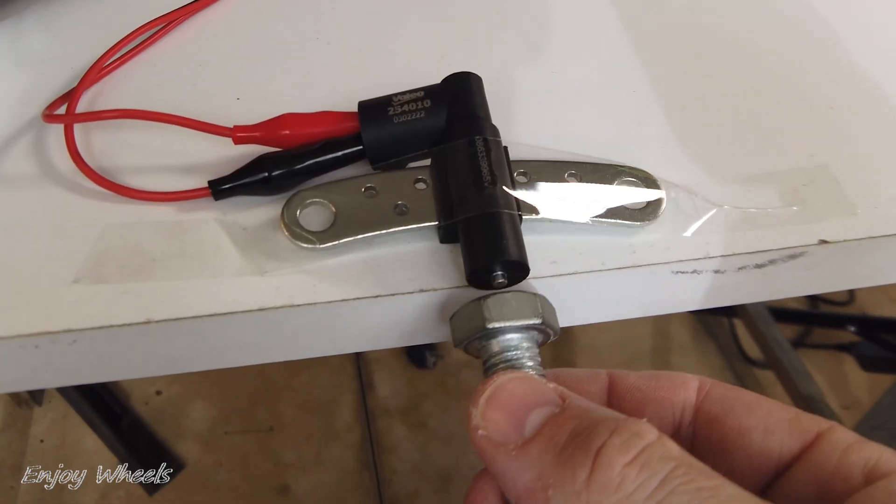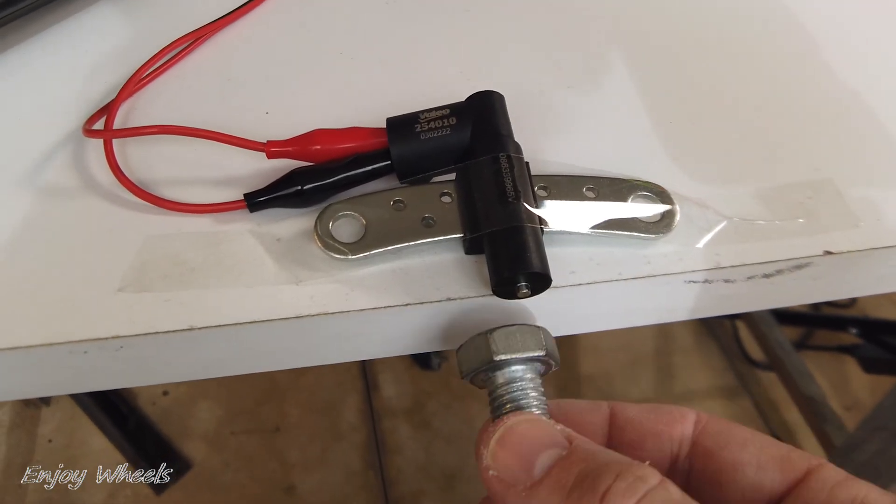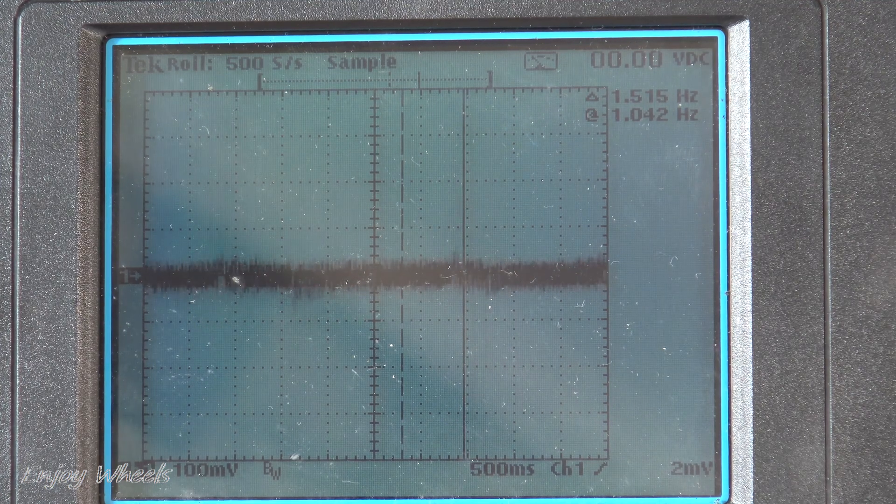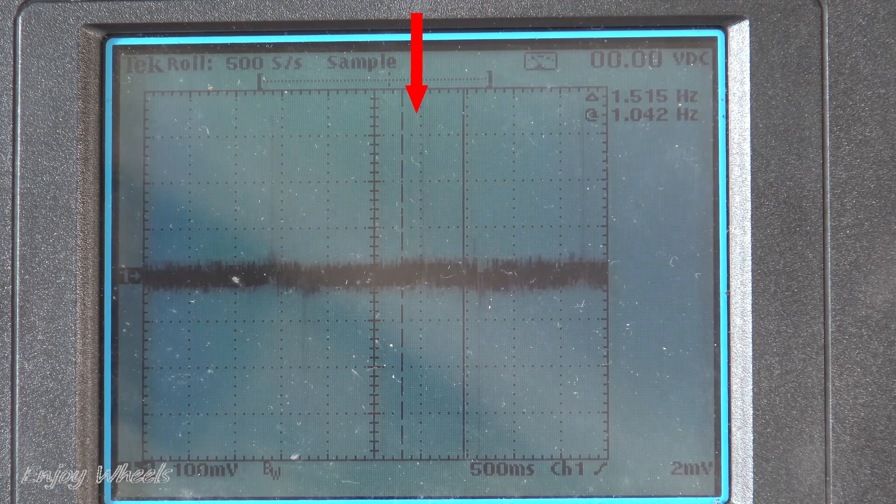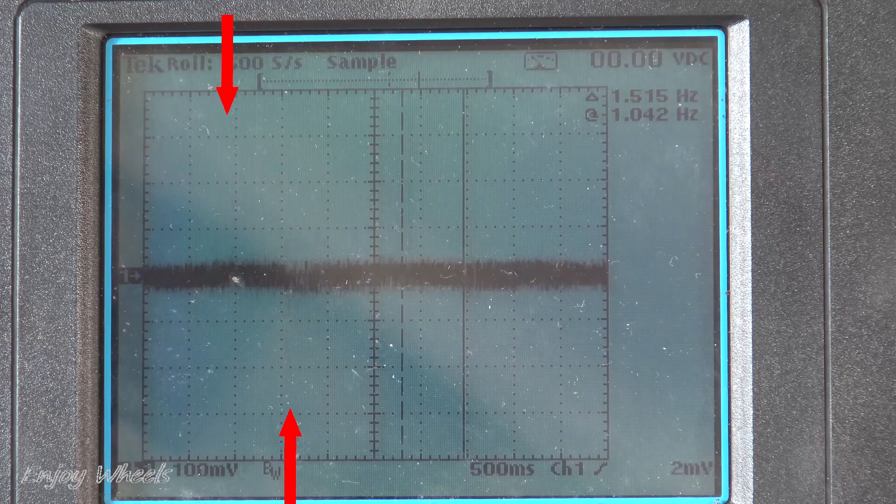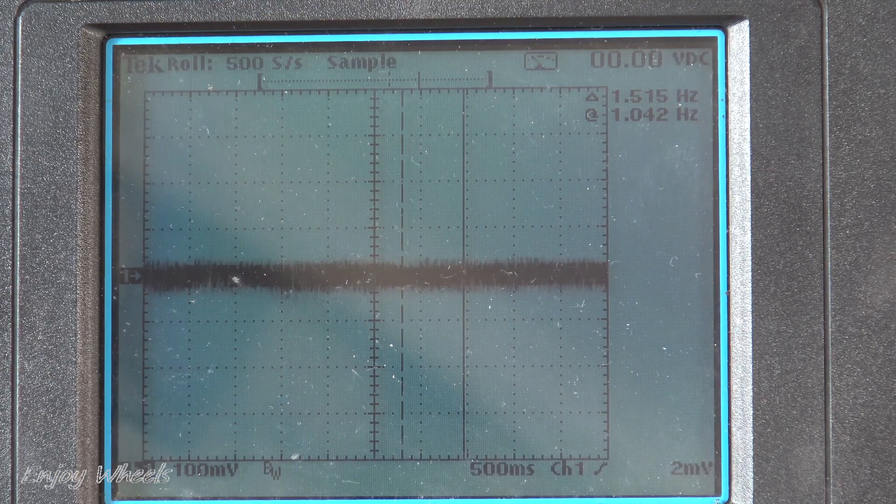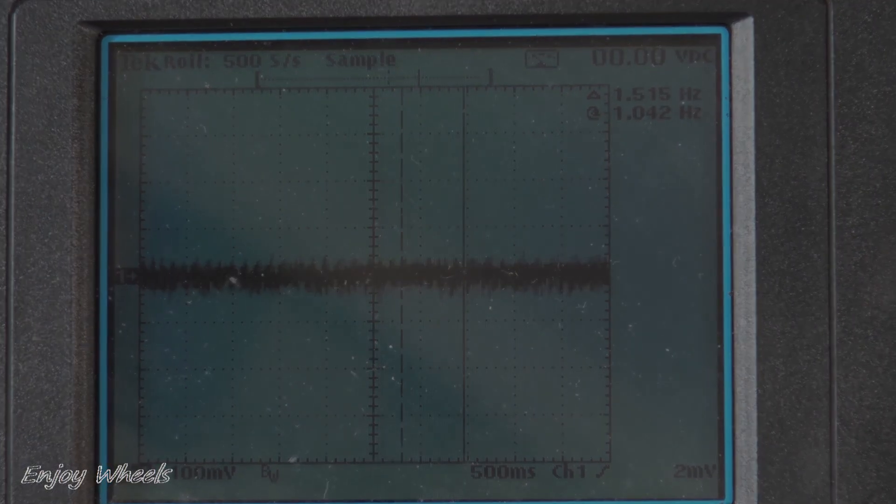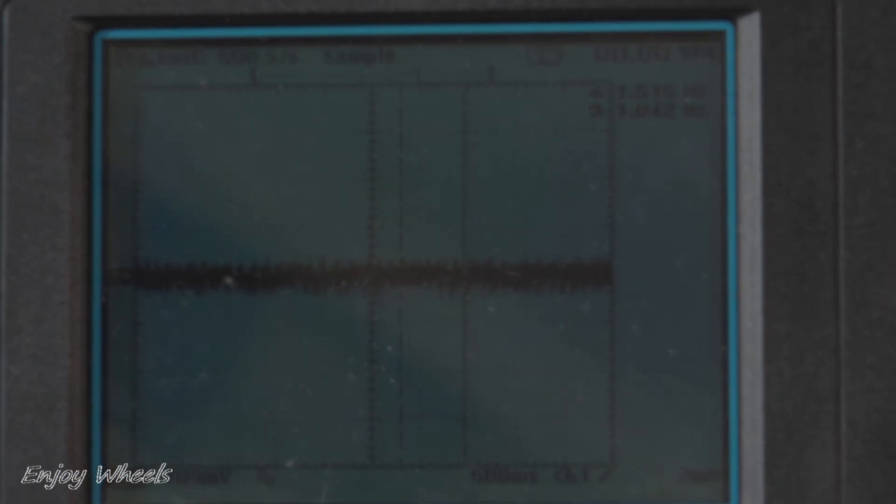When I approach and remove the screw from the sensor, we see the pulses. A pulse in one direction when I approach the screw, and another in the other direction when I remove it. And there you go. Now I hope you have all the information needed to be able to test the inductive sensors outside the car.